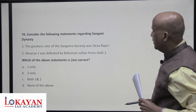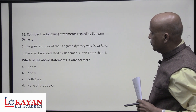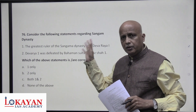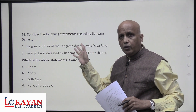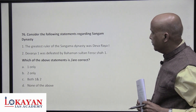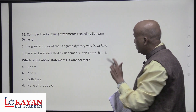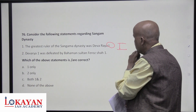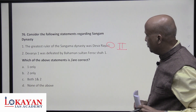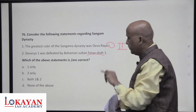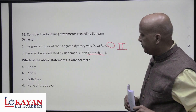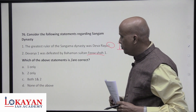Regarding the Sangama dynasty of Vijayanagara: there are four dynasties — Sangama, Saluva, Tuluva, and Aravidu. The founding dynasty is the Sangama. The greatest ruler of the Sangama dynasty was Devaraya II, not Devaraya I. Devaraya I was defeated by the Bahmani sultan Firuz Shah I — correct. After that he made Firuz Shah his son-in-law. So only statement two is correct — answer is B.